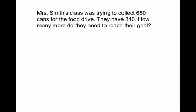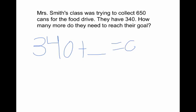First, I wrote my 340 and then I wrote my plus, and then I wrote a blank line because I didn't know what it was going to equal. Then I wrote my equal sign and then I wrote the answer, and then I went back to figure it out. I did 3 plus 3 equals 6, and then 40 plus 10 equals 50, so I wrote a 10 — and that's how I got my answer.